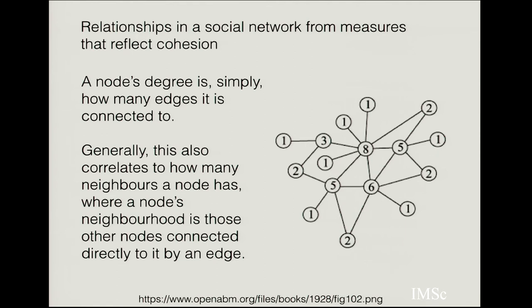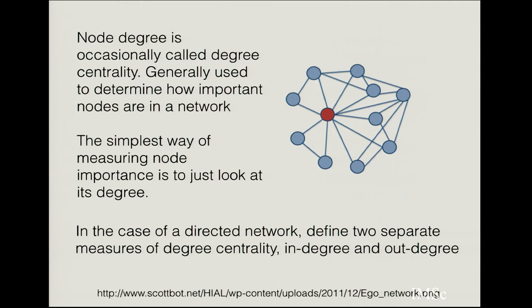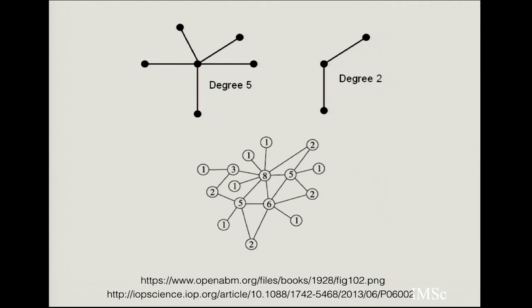There are other measures in social networks that reflect the cohesion of a graph. The most important of these is a node's degree — simply how many edges it is connected to — which correlates to how many neighbors a node has. For example, a node with five connected edges has degree 5, and the most well-connected point in the example has 8 neighbors. The node degree is also called degree centrality, used to infer how important nodes are in the network. For directed networks, you can generalize this to include both in-degree and out-degree.